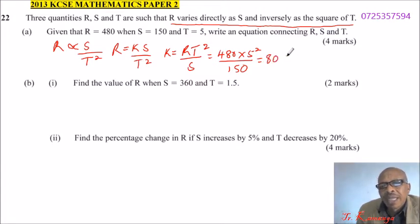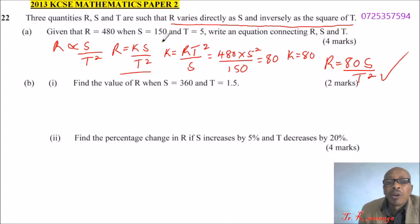This means K equals 80. Therefore, now we can write this equation: R equals 80S divided by T squared. That is the equation connecting R, S, and T.